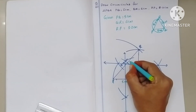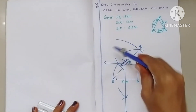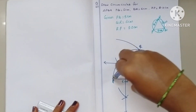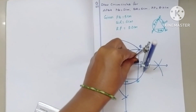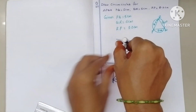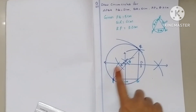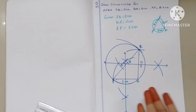Name that intersecting point as O. Now by taking O as center and OP as radius, draw a circle. This is the required circumcircle — it passes through all three vertices of the triangle P, Q, and R.